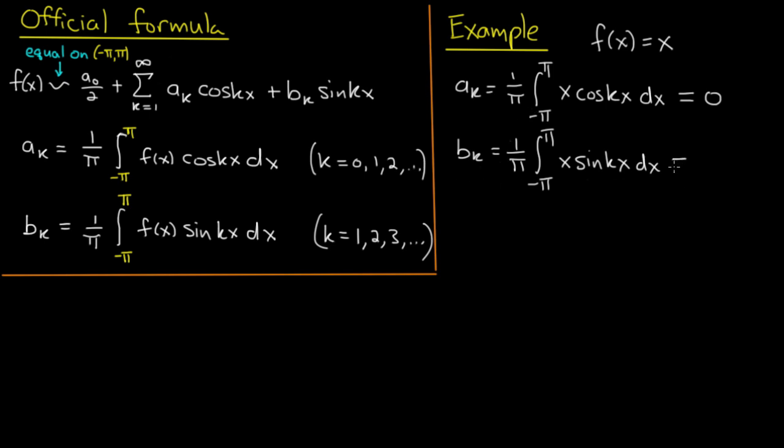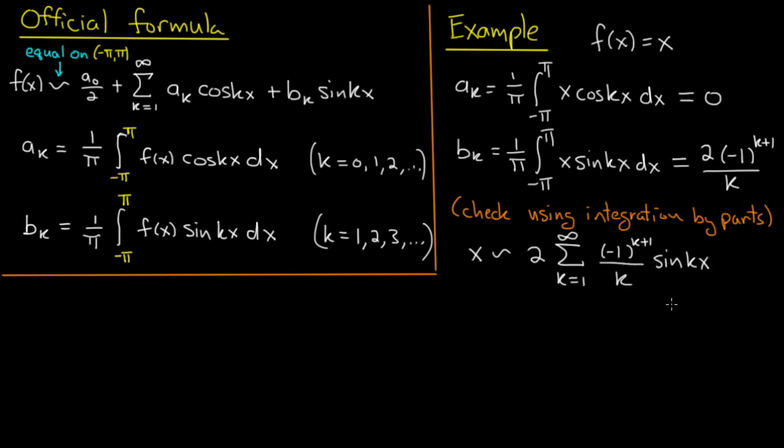Now the b_k's we'd need to actually do a computation, and that computation is a simple integration by parts. I've done it ahead of time, so I'll tell you what the answer is: 2 times (-1)^(k+1) divided by k. I encourage you to check this using integration by parts. So it's a good exercise. And that's it, we're done. We have that the Fourier expansion for x is given by this sum. All of the a_k's are 0, including a_0. So we just have the b_k's times sin kx. The b_k's are given by these formulas. So we have 2 times the sum from k equals 1 to infinity of (-1)^(k+1) divided by k times sin kx. If you compare that to the expression we had in the last video, you'll find it's exactly the same.